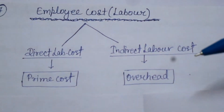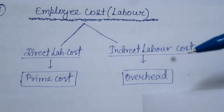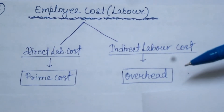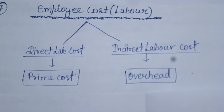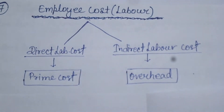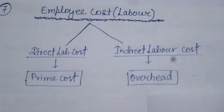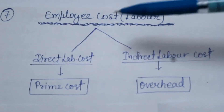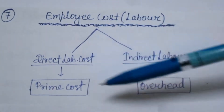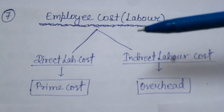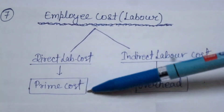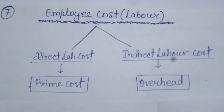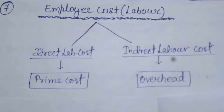इस Chapter में हमको पढ़ना क्या है — इस Chapter में आज हम Wages को Compute करना सीखेंगे. एक Company में Wage Payment कैसे हो सकती है वो सीखेंगे. आज हम Direct Labor Cost पढ़ेंगे, जो कि Prime Cost का पार्ट है.